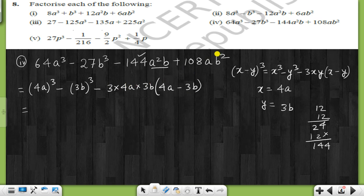So we can write this as 4a minus 3b whole cube. We will write this as factorize. This is 4a minus 3b into 4a minus 3b into 4a minus 3b.